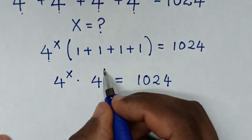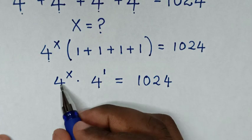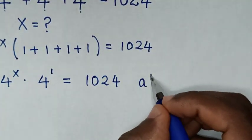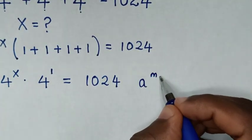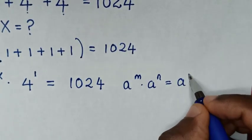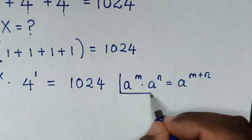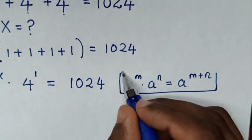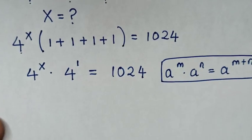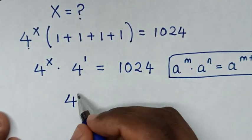Now, 4 is the same as 4 power of 1. We apply the exponent rule: a power of m times a power of n is equal to a power of m plus n. So with the common base of 4, it becomes 4 power of x plus 1.